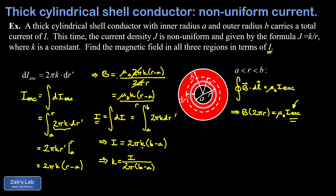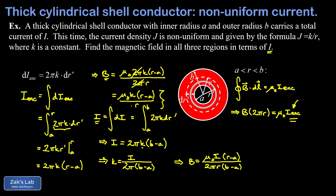Substituting k = I / [2π(b − a)] into our expression for B, we replace k to get the final answer: B = μ₀I(r − a) / [2πr(b − a)]. The μ₀I factor appears as expected in our answer.